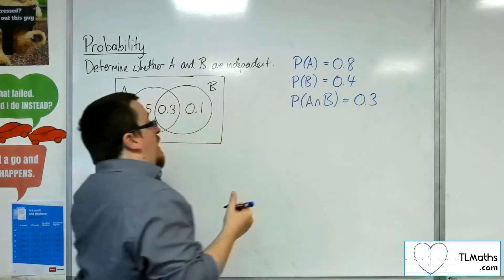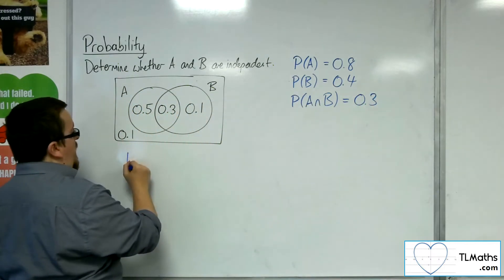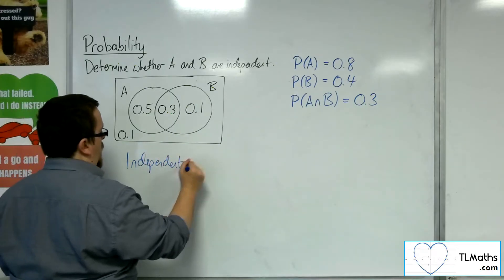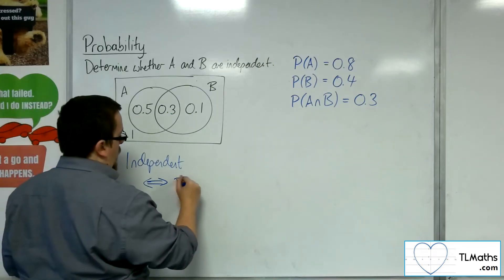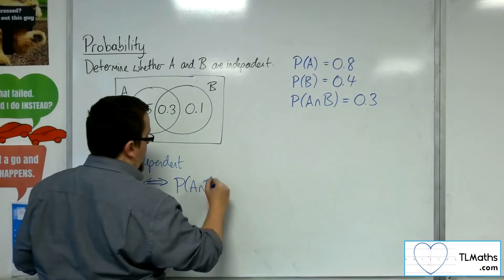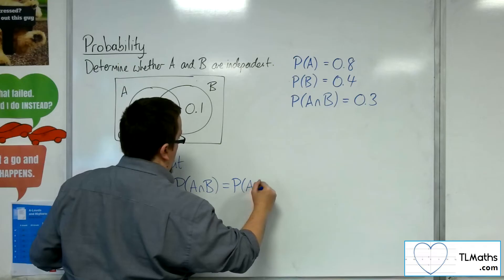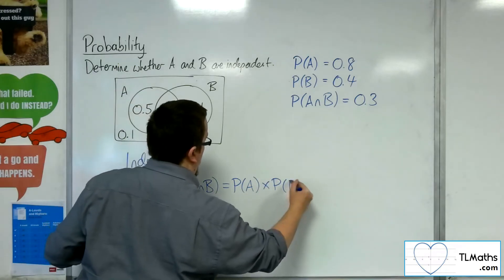Now I know that A and B are independent if and only if the probability of the intersection is the same as multiplying the two individual probabilities together.